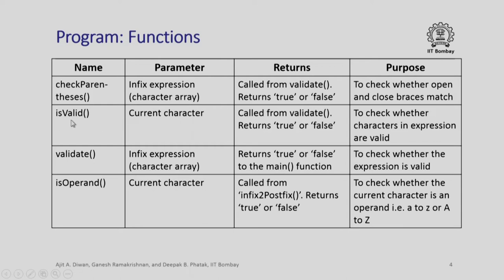The is_valid function takes the current character as a parameter. The current character is valid only if it is either an operator or an operand. For this example we have presumed that all operands are single letter operands, a to z or capital A to Z. This is a simplification but sufficient to check whether the character is valid or not.